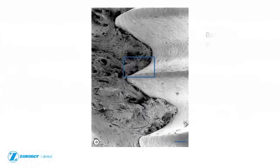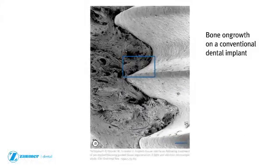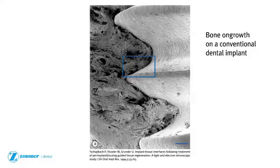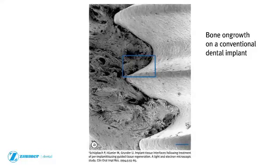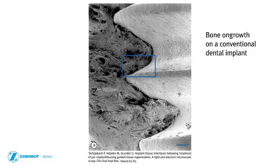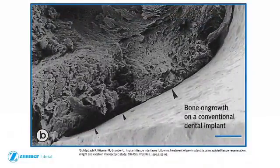Conventionally coated or textured implants achieve bone-to-implant contact or on-growth, limiting the degree of tissue attachment. Bone grows onto the implant surface, but scattered gaps and voids may still be present along the interface.